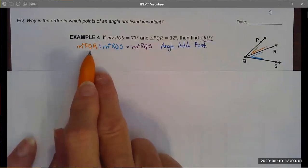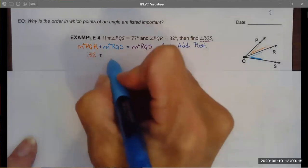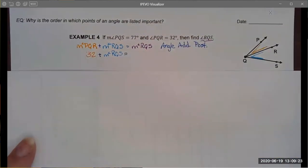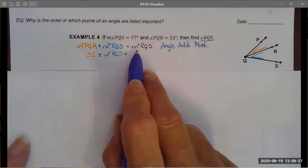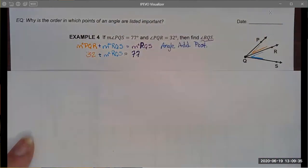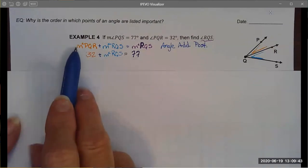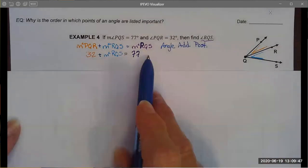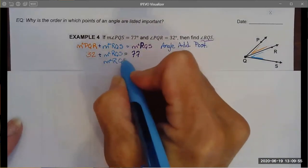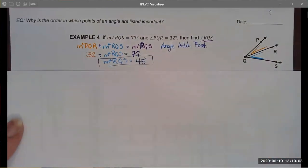I wrote out what the angle addition postulate for this particular example would be and now I'm going to do some substitution. I'm going to substitute the measure of PQR, leave RQS as a variable because that's what we're looking for, but we know the whole angle PQS is 77 degrees. Now I have an algebraic equation that has translated our geometric equation into numbers we can work with. I subtract 32 from both sides and that leaves me with the measure of RQS being 45 degrees.